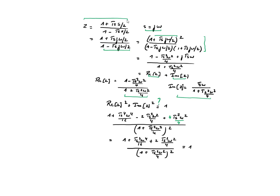Taking the squares of the real and imaginary parts under the same denominator: we square the numerator of the real part and add the square of the numerator of the imaginary part. We factor out a 4 so terms cancel, giving a plus 2, and the remaining expression in the numerator is exactly the same as the denominator. So this is equal to 1 — confirming that the jω axis is mapped onto the unit circle.